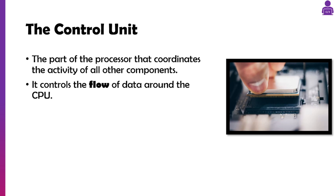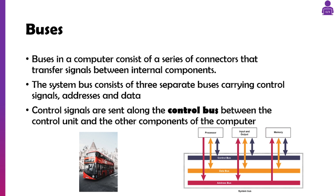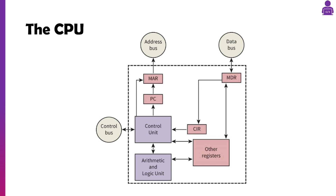Buses are a way of transferring data around the CPU, just like a bus transfers you around a city or a town. There are three specific ones you need to know about: the control bus, the data bus, and the address bus. From the diagram on screen, you can see the control bus only talks to the control unit, the address bus talks to RAM and the memory address register, and the data bus talks to the memory data register.